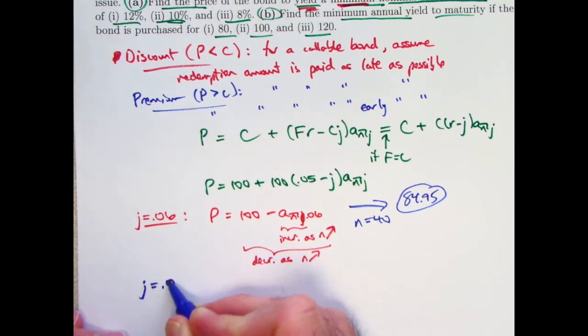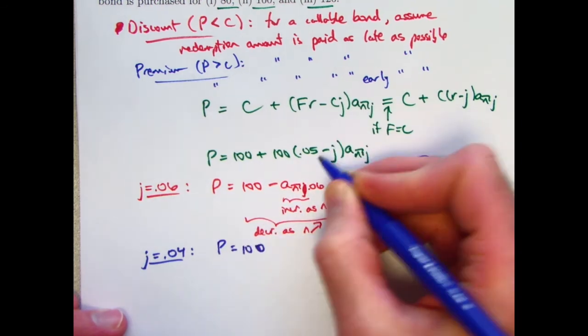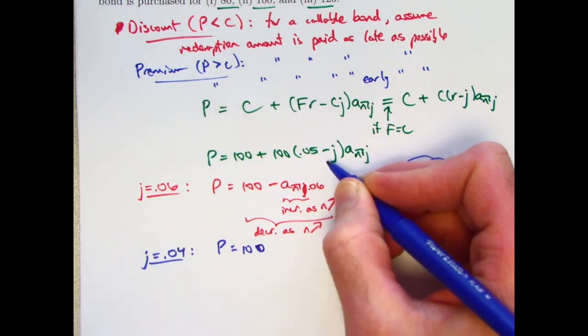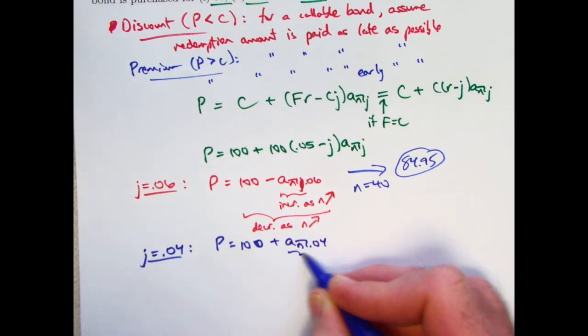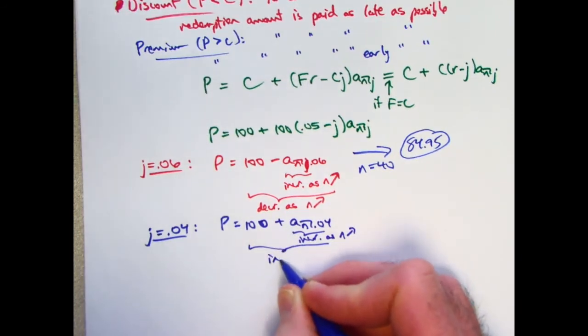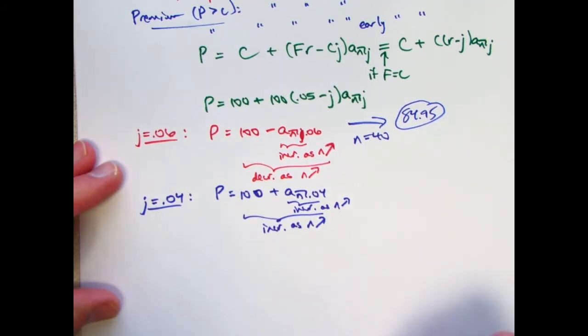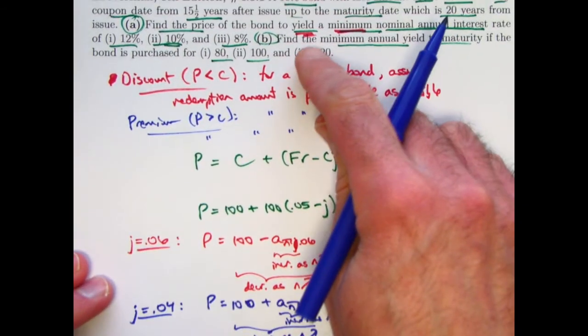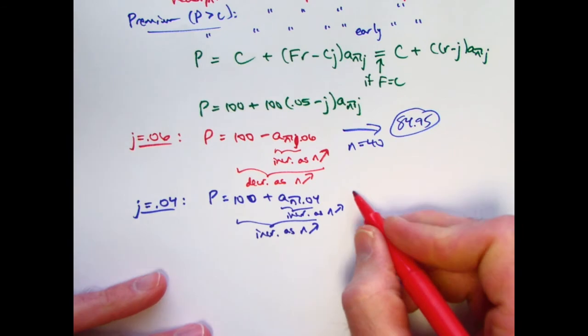In the case where you buy at a premium, when j is relatively low and the coupon rate is relatively high, this formula here becomes 100 plus, if j is 0.04, I get 0.05 minus 0.04 is 0.01, times 100 is 1. So I get 100 plus a n j, where j is now 0.04. This once again increases as n increases, making the whole quantity here, since there's a plus sign there, now also increase as n increases. So at the given yield rate, if n were higher than the earliest possible date, you'd pay more. So if you pay less, as you do here, by plugging in a smaller value of n, your actual yield would be higher. So once again, we are emphasizing that this is going to give us the minimum possible yield of 4%. By now plugging in n equals the lowest possible value, which is 31.